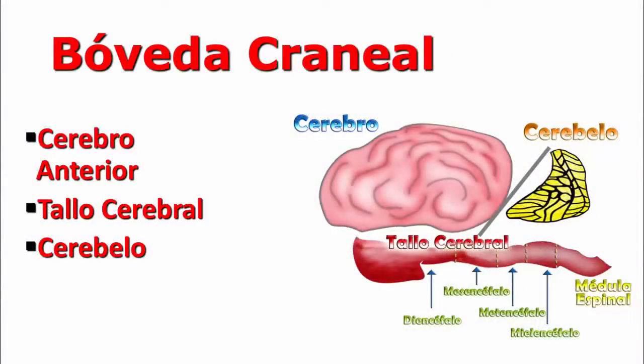Vamos a empezar ahora a dividir las áreas. Recordemos nuevamente que tenemos tres zonas importantes dentro del cráneo. De las seis que tenemos, vamos a tener tres dentro de la bóveda craneal.